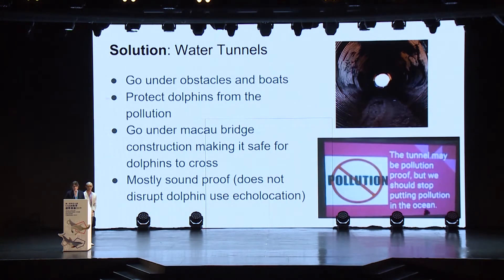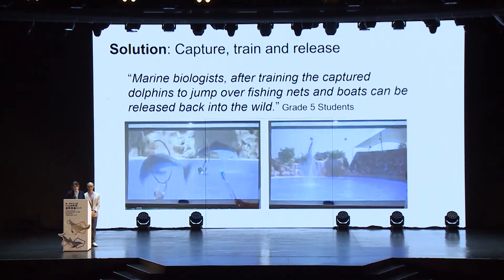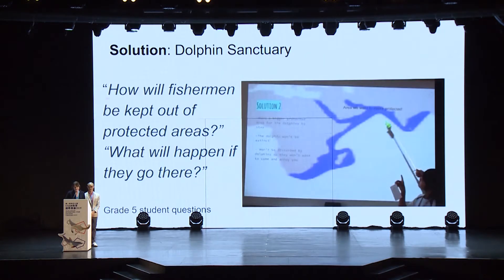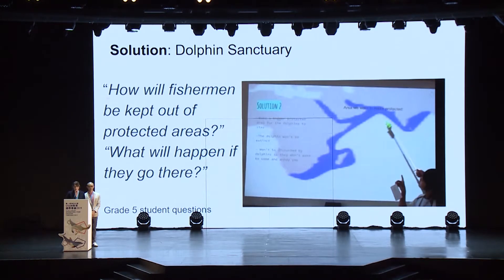In another solution, boys who had been interested in bridges and tunnels under highways in North America created tunnels in the ocean near the bridge construction site, which was interrupting the dolphins' ability to use echolocation to find food. Another solution was capture, train, and release — coming from looking at the behaviors, intelligence, and agility of dolphins, training them to jump over nets and boats. In another presentation, girls talked about having a protected area for the dolphins, prompting audience questions such as: how will fishermen be kept out of protected areas, and what will happen if they go in?